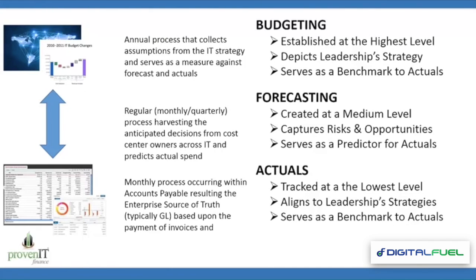A budget is typically the highest level grouping of numbers. Its primary purpose is to align dollars to a strategy that the organization is trying to achieve. A forecast is an interim plan that gauges the current state of the organization's financials and attempts to capture the risks and opportunities that lie ahead, typically during a budgeting cycle. Actuals represent what was achieved so far through the year and become a baseline for comparison between budgets and forecasts.